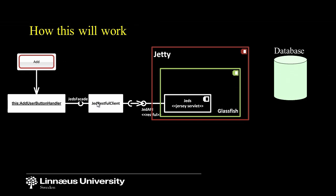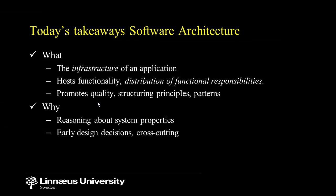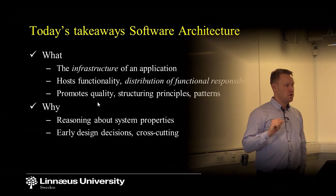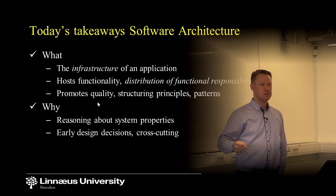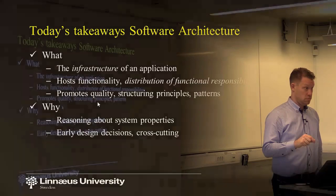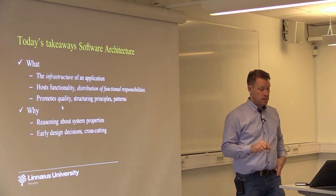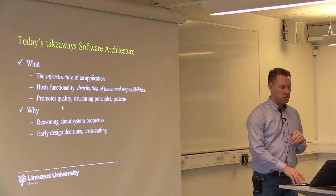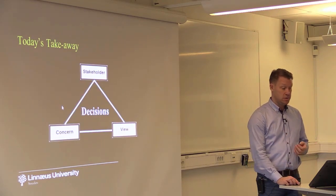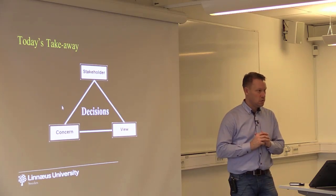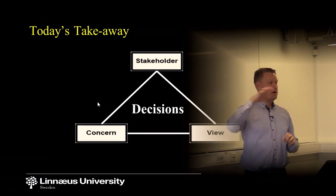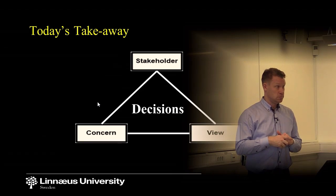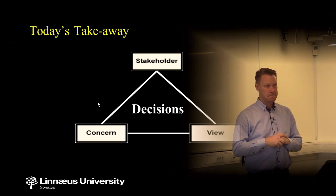So today we spent one lecture trying to figure out what software architecture is all about. We do this because we want to reason about system properties — early design decisions that cross-cut the entire system — before we decompose it into subsystems. There was no recipe for doing this. We had to keep in mind that we have stakeholders, concerns, and different views to explain and capture all the decisions and their rationales. Today was about high-level decisions; next time we focus more on low-level detailed design decisions. Thank you.